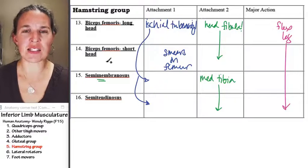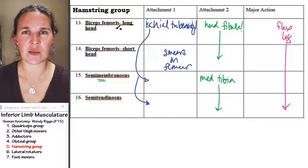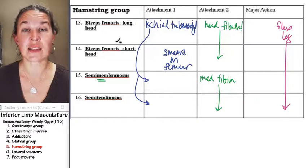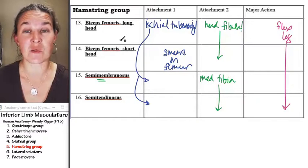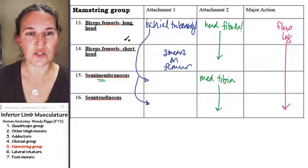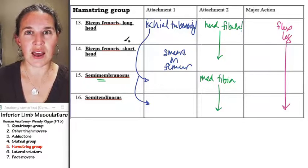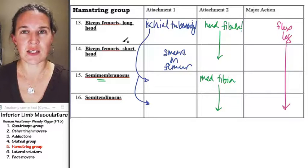It's the shared tendon with the biceps femoris group. The long head and the short head both attach to the head of the fibula, and you can feel that tendon on your posterior thigh when you flex your leg.